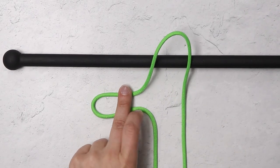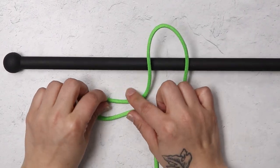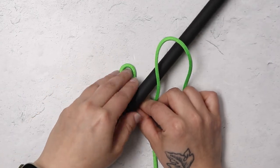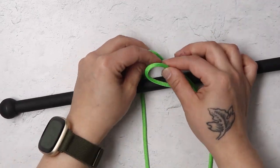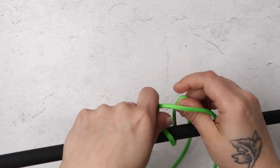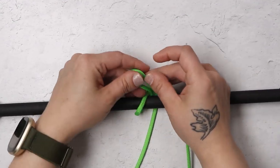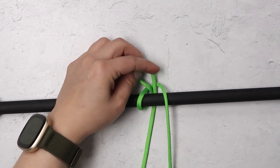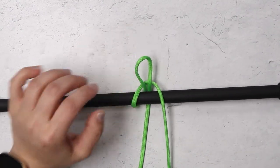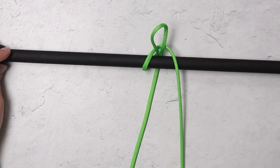I'll take my left hand working end and create another bite that I will pass around the back of my dowel and through the very first bite that I made. And in this case your working end will be over the top of your dowel or item that you're hitching to on the right hand side and your other end should be underneath the dowel.